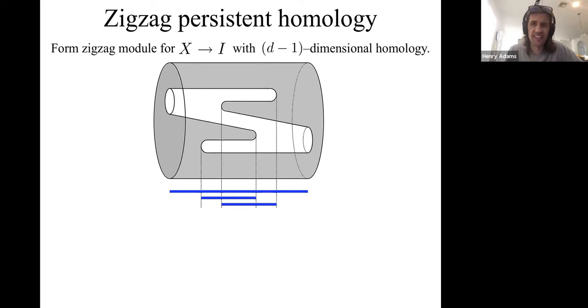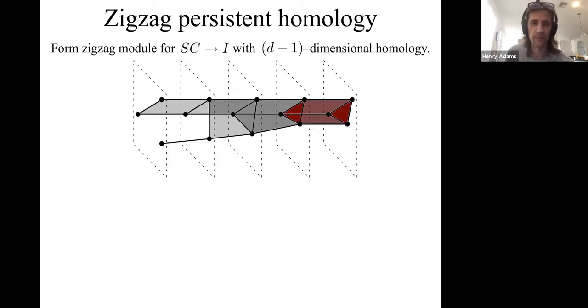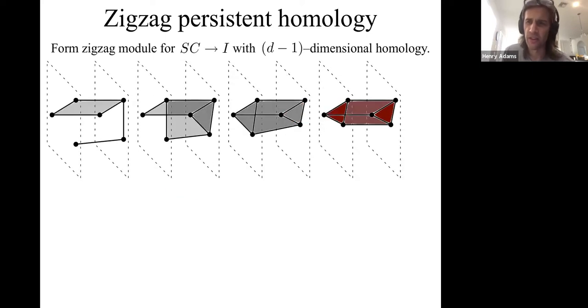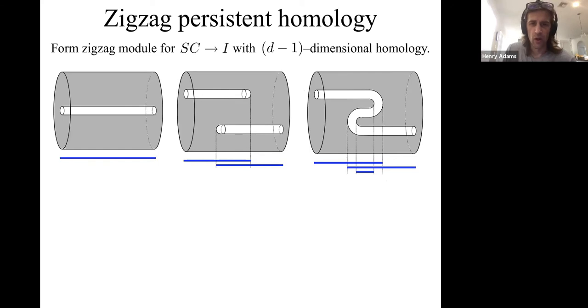Zigzag persistence is more counterintuitive than persistent homology. In persistent homology, I could show an expert a growing sequence of spaces and ask them to draw the bars and they would get it right every time. Zigzag persistence, when a space gets larger and smaller, if you ask an expert to draw the bars, myself included will sometimes get it wrong. It's a little bit more counterintuitive. You can make this all computational if you discretize things in time and in space.